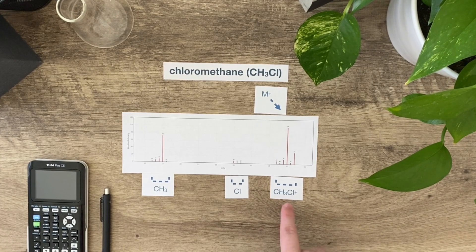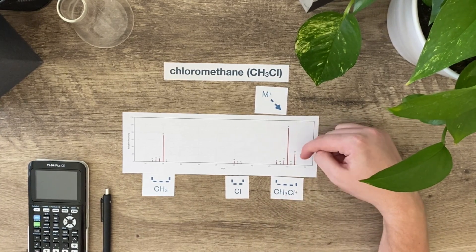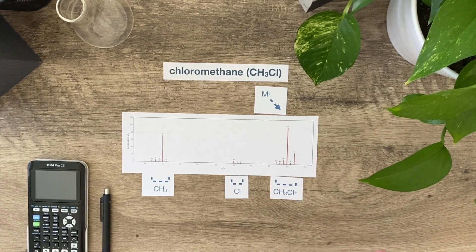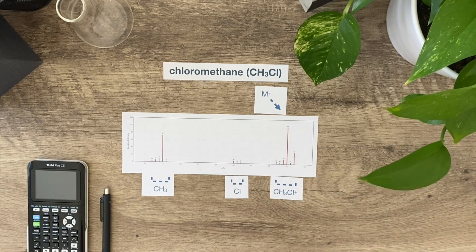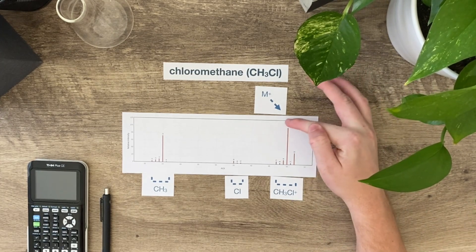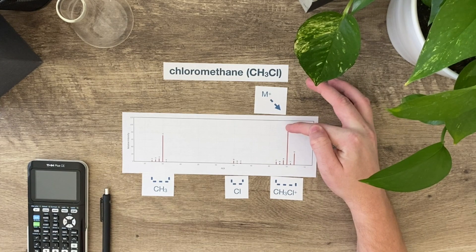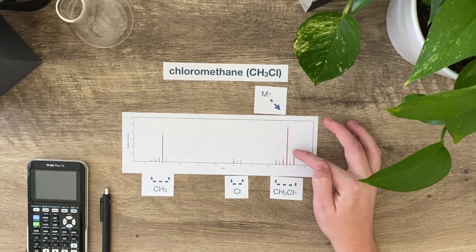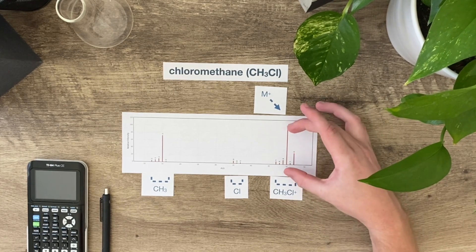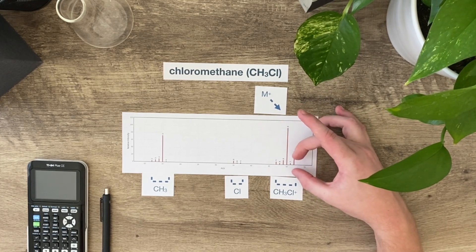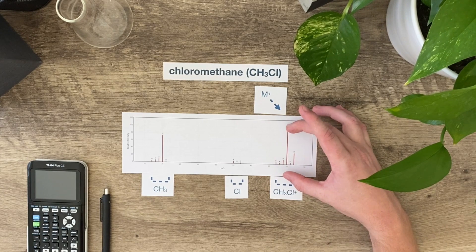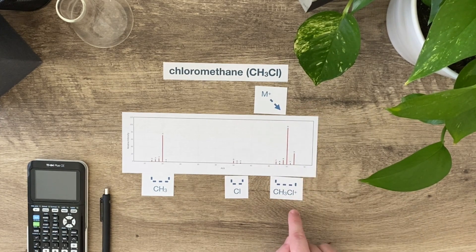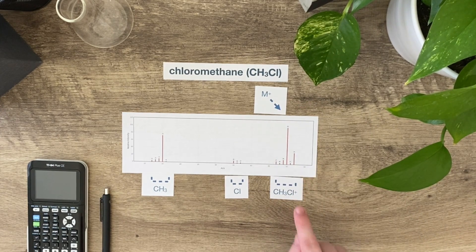This also tells us something else very key. If there's a chlorine present, there will always be this relationship here, because chlorine always has those two isotopes, 35 and 37. I'm going to have a big peak here of 50, that's when I have Cl-35. When I have Cl-37, it's going to be right down here at 52. So this relationship of a peak here and a peak that's about one-third of the M+ peak associates that there's a chlorine present. Anytime I see that, that means chlorine is present.